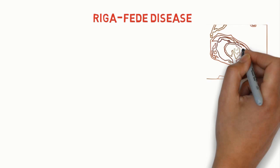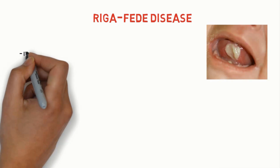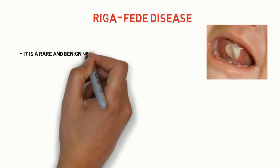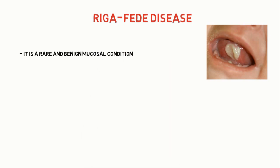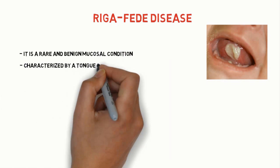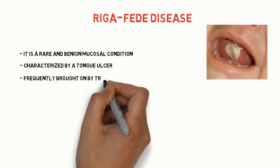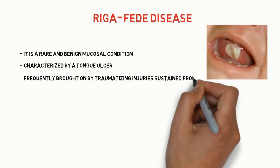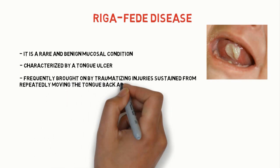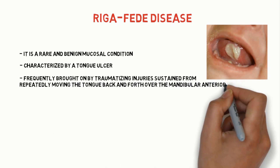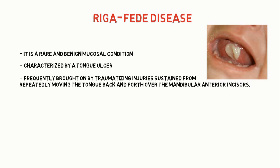Welcome to Medicine Simplified. Today we will learn about Riga-Fede disease, which is commonly seen in infants. It is a rare and benign mucosal condition characterized by tongue ulcers, frequently brought on by traumatizing injuries sustained from repeatedly moving the tongue back and forth over the mandibular anterior incisors.